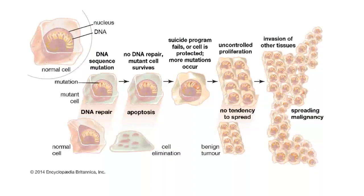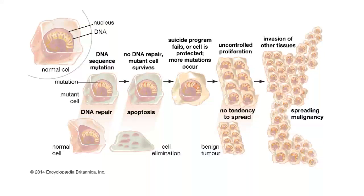Before understanding apoptosis further, let's discuss the consequences when apoptosis does not happen properly, because it is important to understand why we study this process. If apoptosis does not occur in your body, consider what changes your cells will show. You have a normal cell in its initial state with cellular organelles and a well-defined nucleus containing genetic material in the form of DNA.